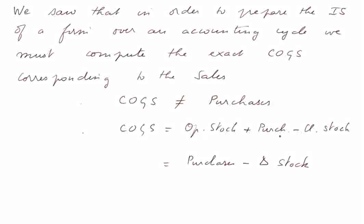Another way to write the same formula is purchases minus delta stock. Delta means variation, that is closing stocks minus opening stocks.